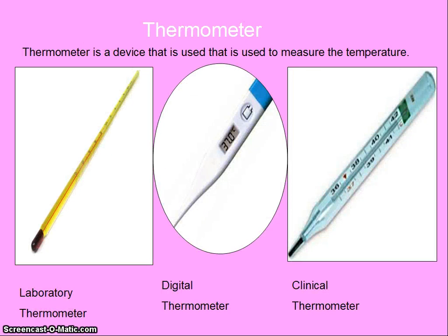How do we measure the temperature? Temperature is measured by a device known as a thermometer. There are two types of thermometers: the laboratory thermometer and the clinical thermometer. Laboratory thermometer is used to measure the temperature of objects in a laboratory, while the clinical thermometer is used to measure the temperature of the human body. These days, digital thermometers are used to measure the temperature of the human body because these are safer than traditional thermometers.